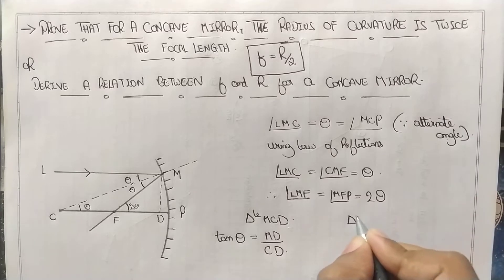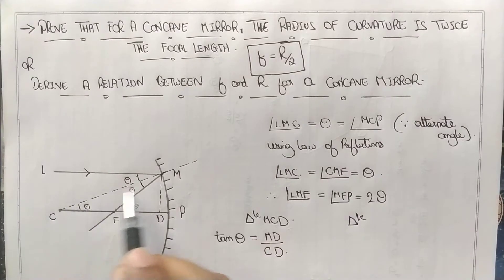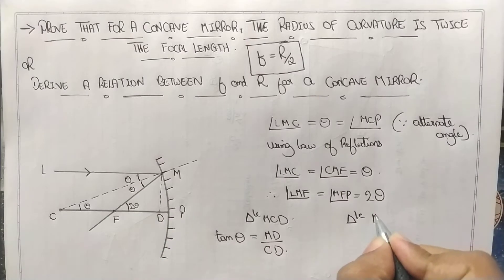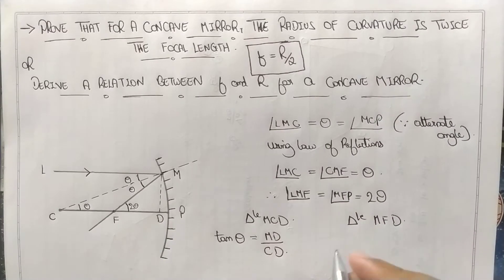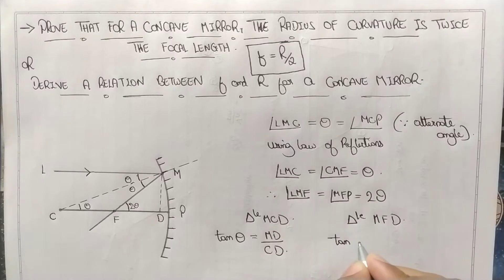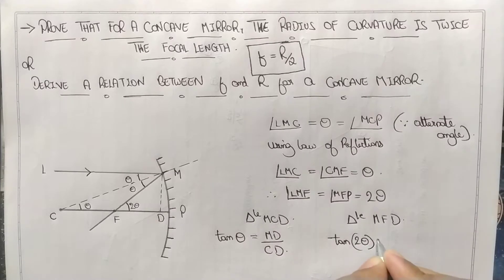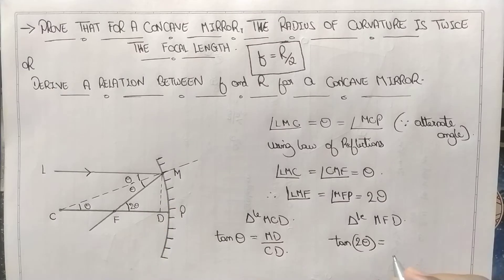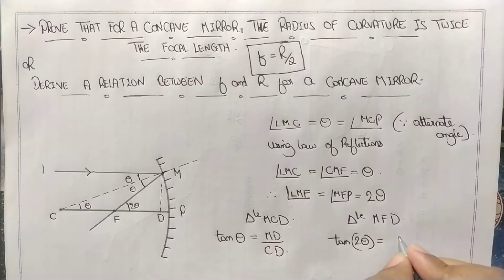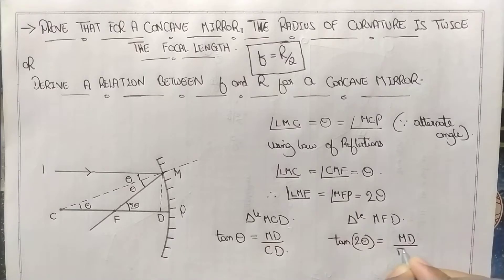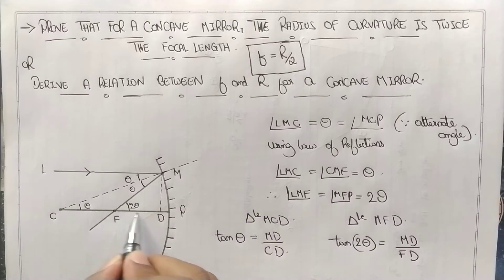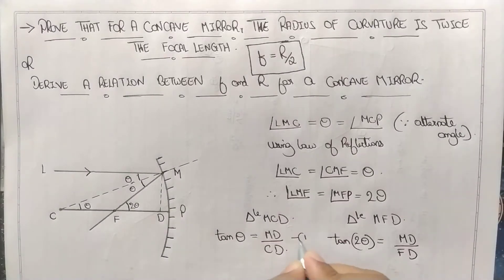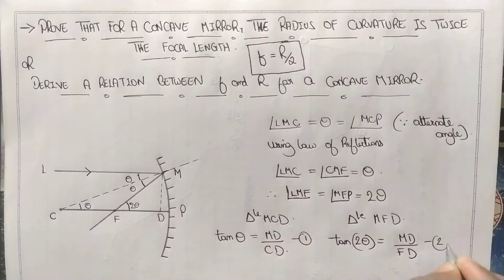Now from triangle MFD. What do we have? Here it is two theta. Again, tan 2 theta equals opposite divided by adjacent. That is MD divided by FD. Adjacent is FD, opposite is MD. Take this as equation 1, take this as equation 2.